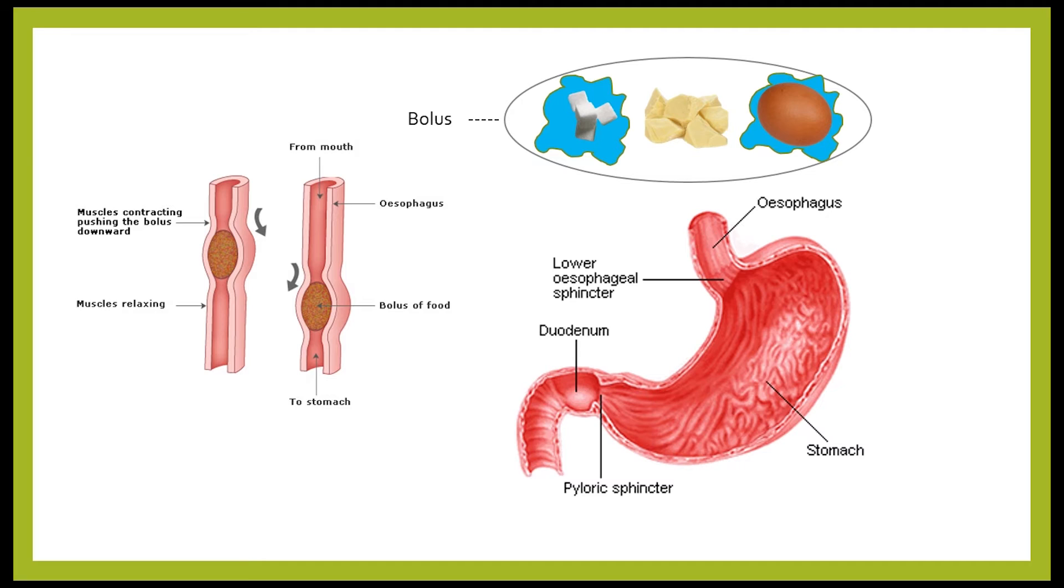The bolus lands in your stomach, which is digested further. The stomach contains an enzyme called pepsin, which breaks down proteins into polypeptides. The stomach is very acidic. This is necessary because in this way almost all bacteria are destroyed. However, also some good bacteria are destroyed.